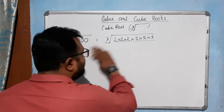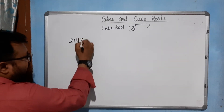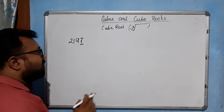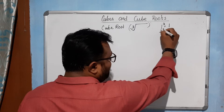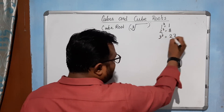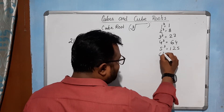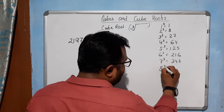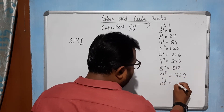Let's see how we find cube root by estimation. Take the example 2197. The unit digit is 7, so whose cube ends with 7? Let's check: 1³=1, 2³=8, 3³=27, 4³=64, 5³=125, 6³=216, 7³=343, 8³=512, 9³=729, 10³=1000. The cube of 3 ends with 7.